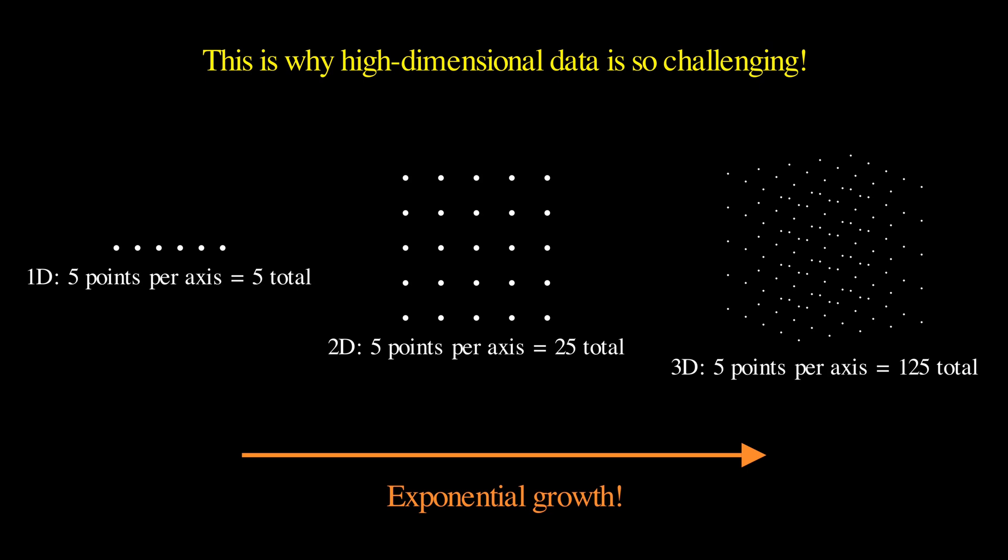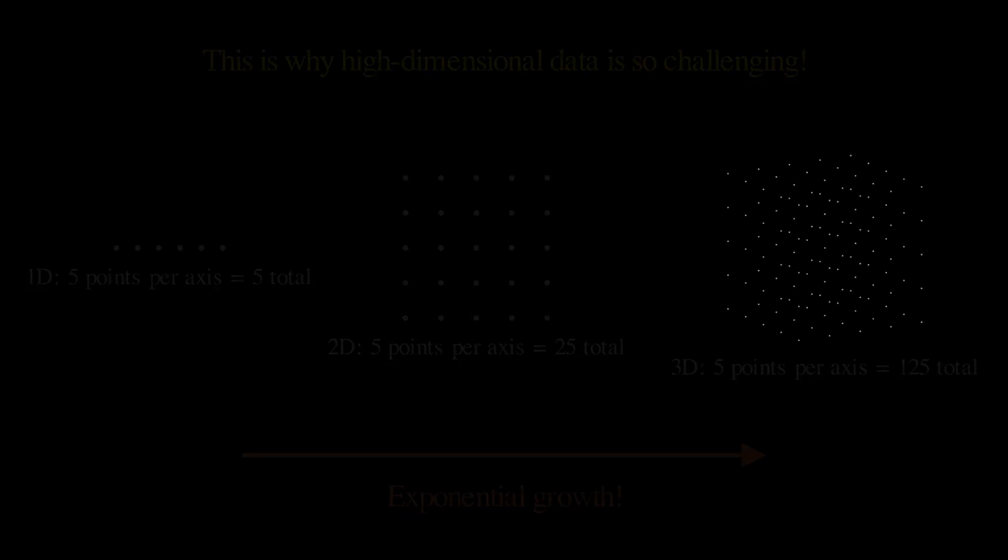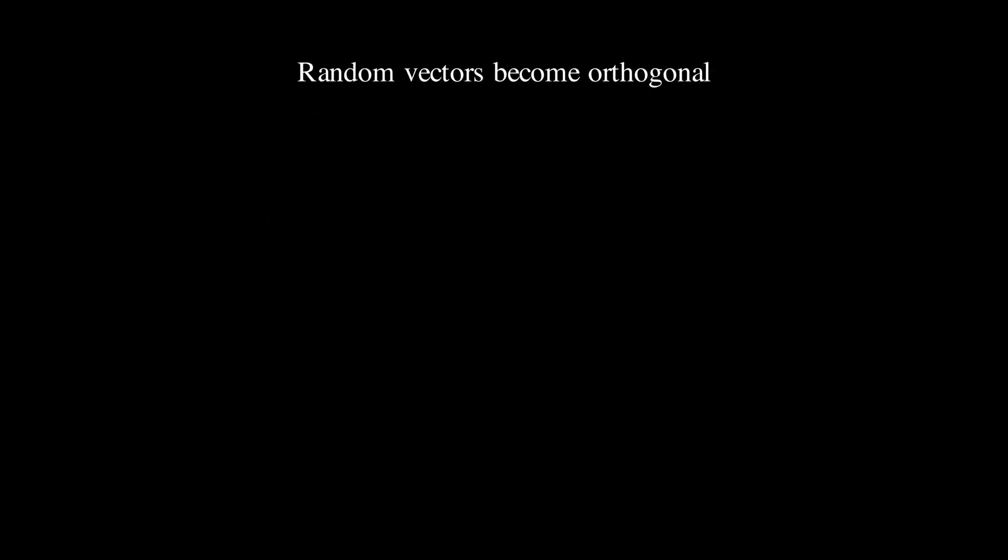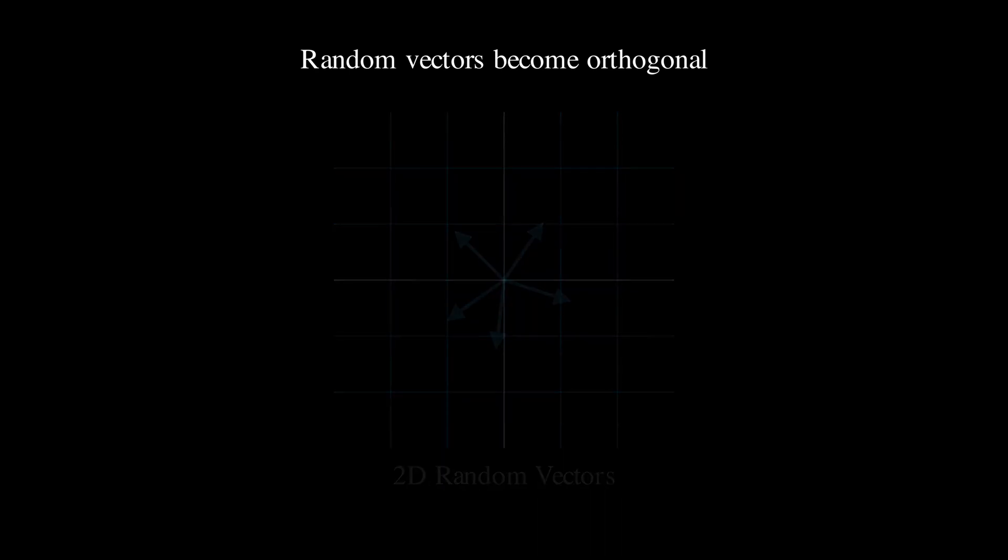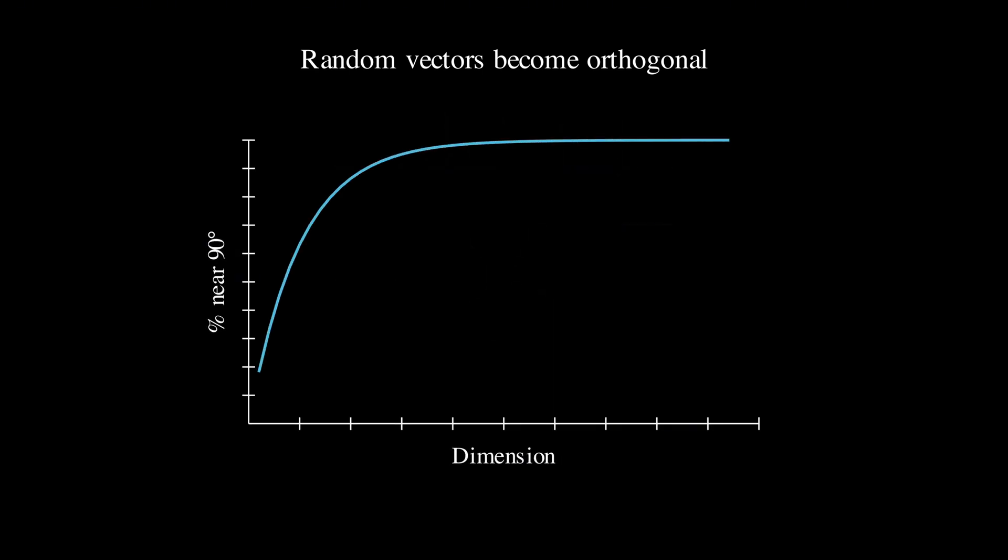Now let's visualize another aspect of it. Consider placing points uniformly at random in a high-dimensional space. As dimensions increase, the probability of two random points being nearly orthogonal approaches one. In other words, random vectors in high dimensions tend to be almost perpendicular to each other.